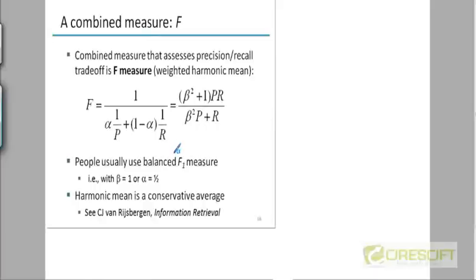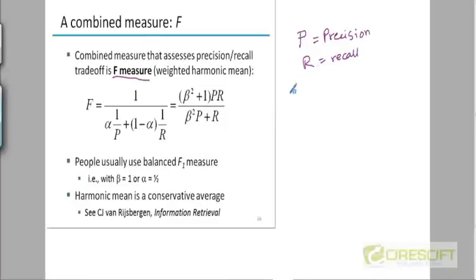One such value is called the F-measure. Let P be the precision and R be the recall. The F-measure is the harmonic mean between the precision and the recall. It is just 2PR divided by P plus R.